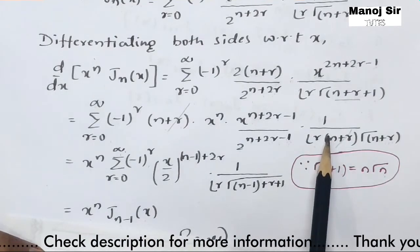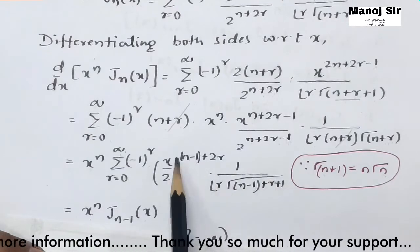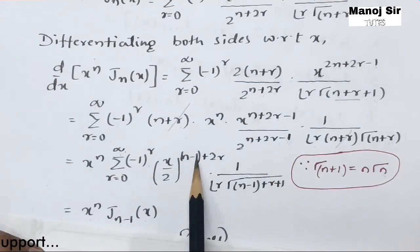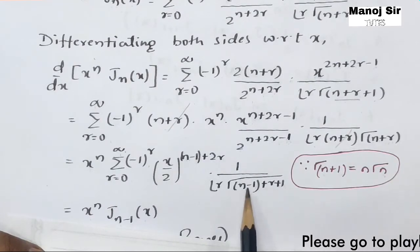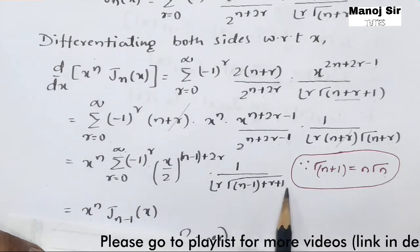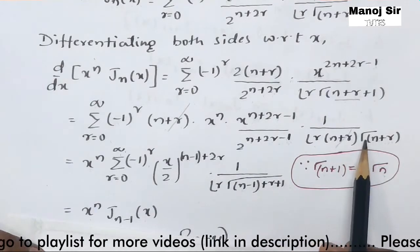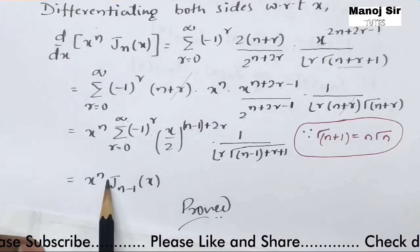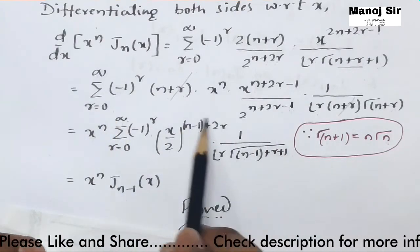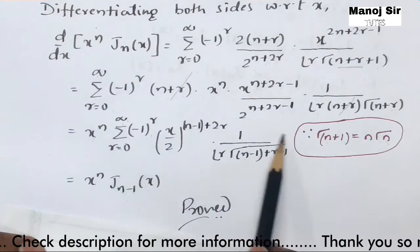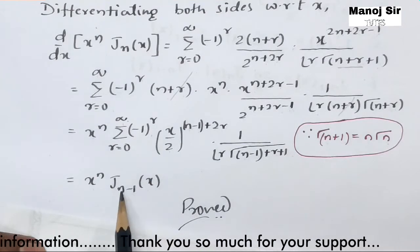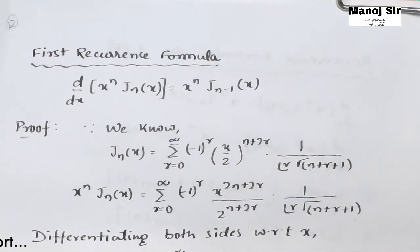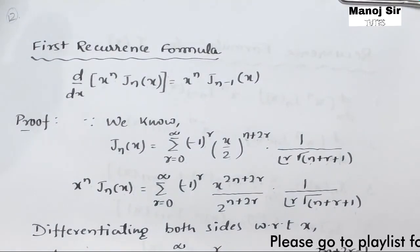The denominator has r! and Gamma(n+r+1). Writing n as (n-1) form: Gamma(n+r+1) becomes Gamma((n-1)+r+1), where the -1+1 cancels to give Gamma(n+r) — no change. The summation now matches J_{n-1}(x). Therefore d/dx [x^n J_n(x)] = x^n J_{n-1}(x). First recurrence formula proved.